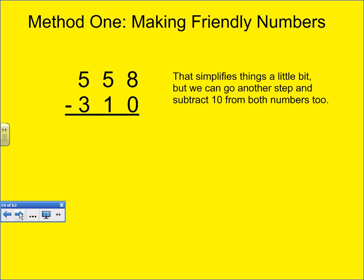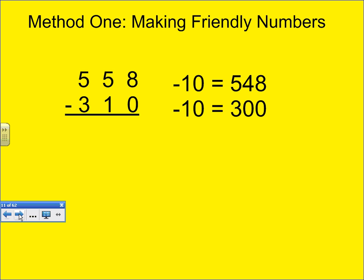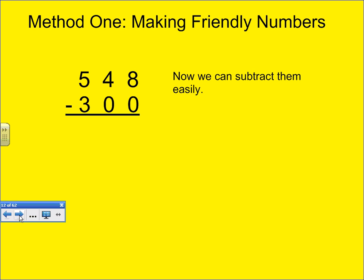That simplifies things a little bit, but we can go another step and subtract 10 from both numbers too. If I subtract 10 from 558, I get 548. Subtracting 10 from 310 is 300. Now, I can subtract them easily in my head. 500 take away 300 is going to give me 248.